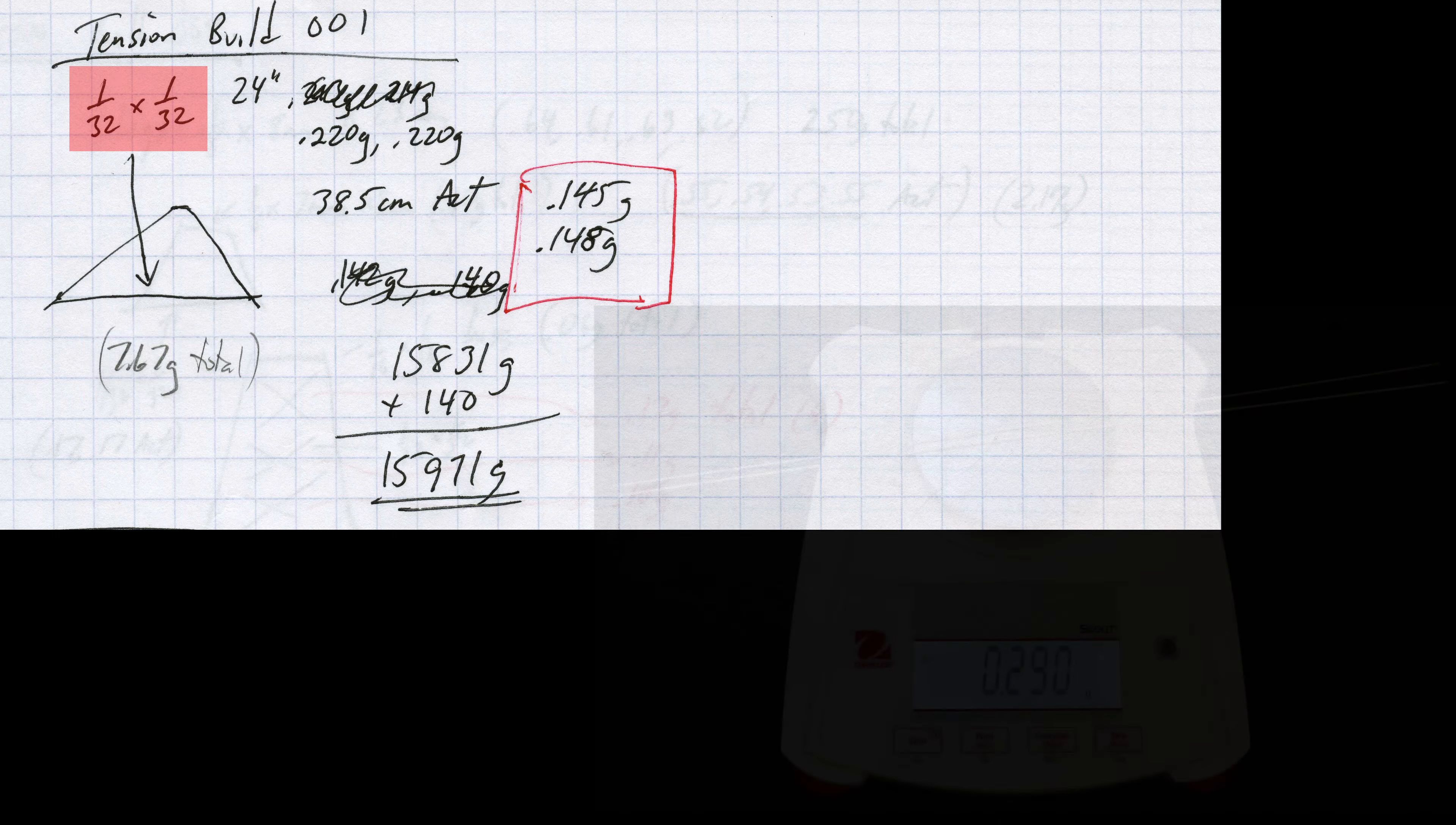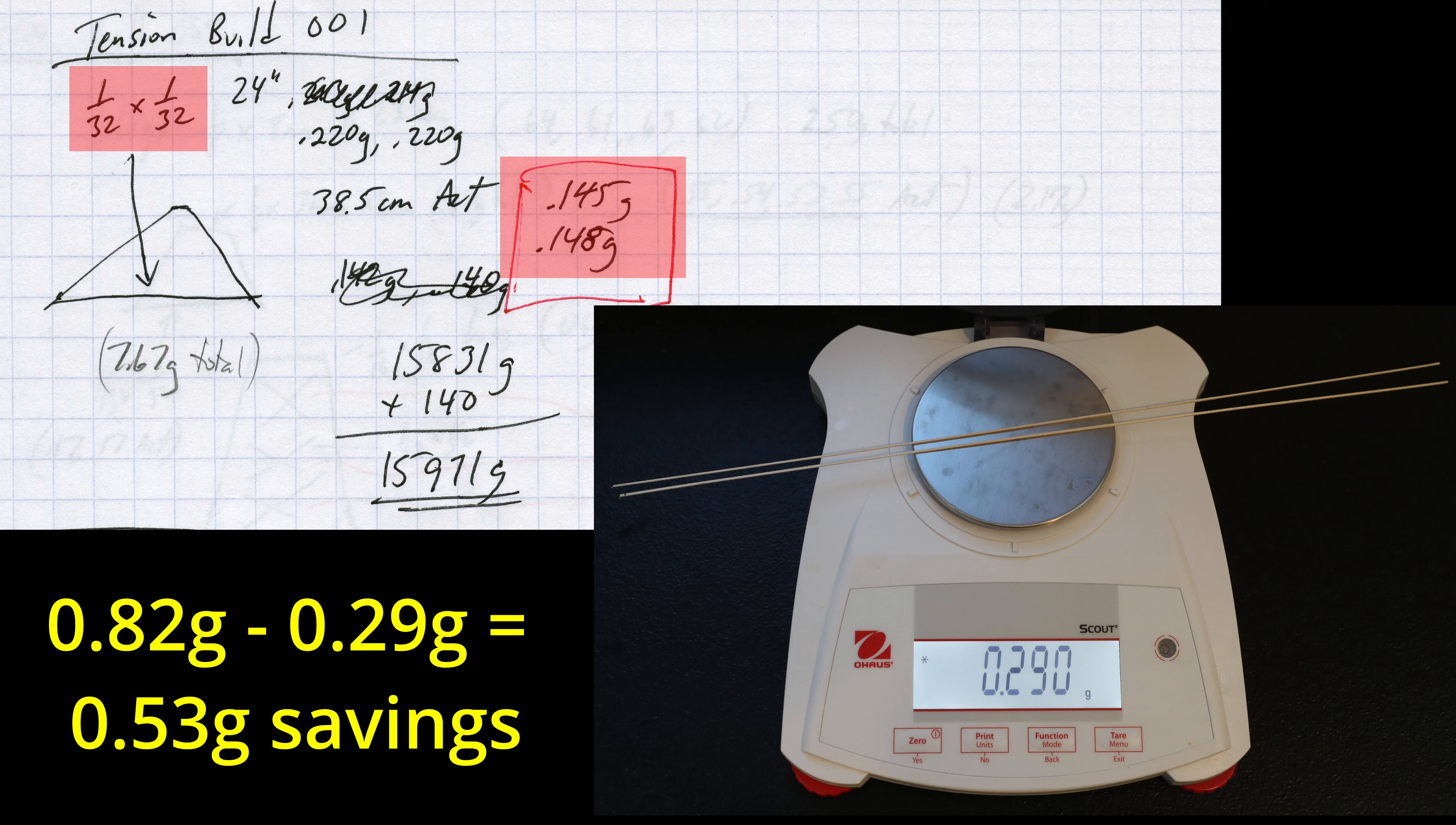If this held the entire weight it could potentially save over 0.5 grams which would be a huge step in getting close to 3 grams total.